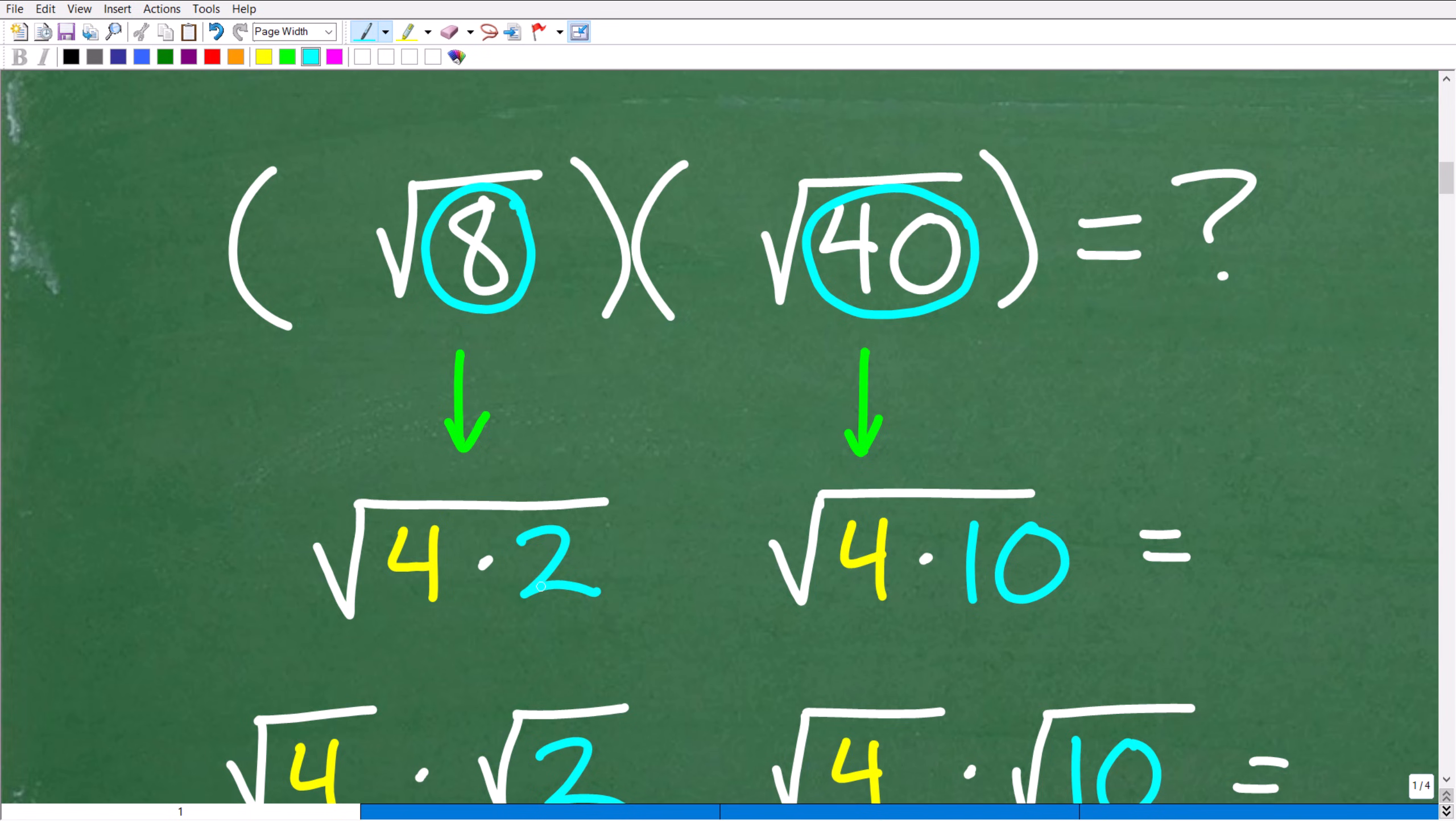Okay. Now, sometimes numbers have these factors. Sometimes they do not. All depends, of course, on the number. Now, what factors am I talking about? Well, I'm talking about perfect squared factors. And here are the numbers we're looking for as factors of a number: 4, 9, 16, 25.